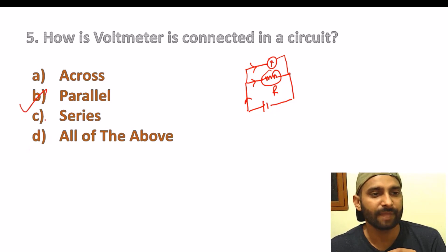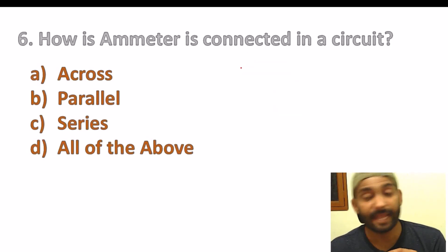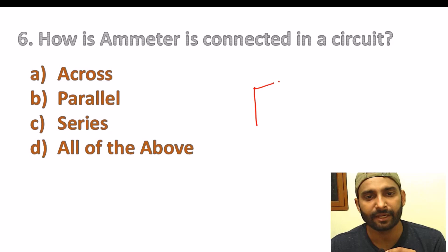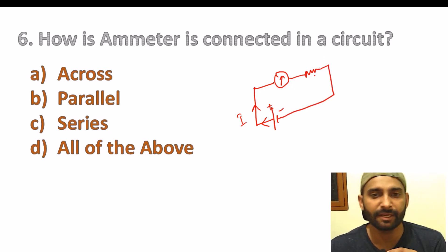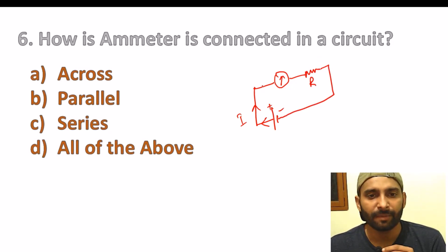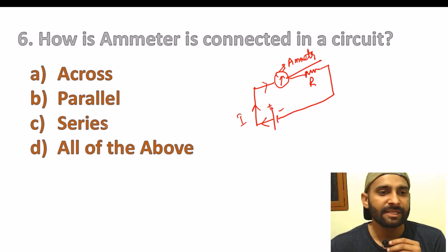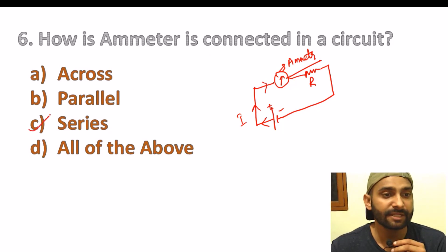So the correct answer here is parallel. Next: how is the ammeter connected in a circuit? Students, here is a circuit diagram — we put a cell with positive and negative terminals, current flows through it. The ammeter is what tells us the current. If we want to know how much current is flowing through the resistance, we use the ammeter in series. Ammeter is always connected in series inside any circuit.